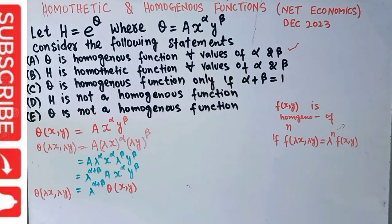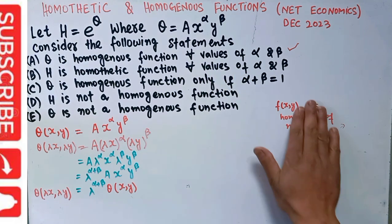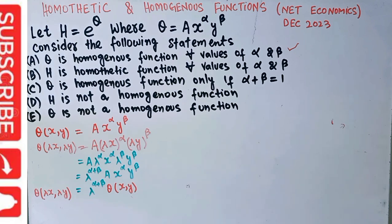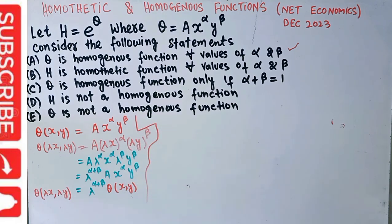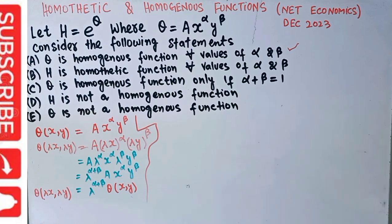Now comes the next statement: h is a homothetic function for all values of α and β. We need to see whether this statement is correct. Let us write the definition of homotheticity.